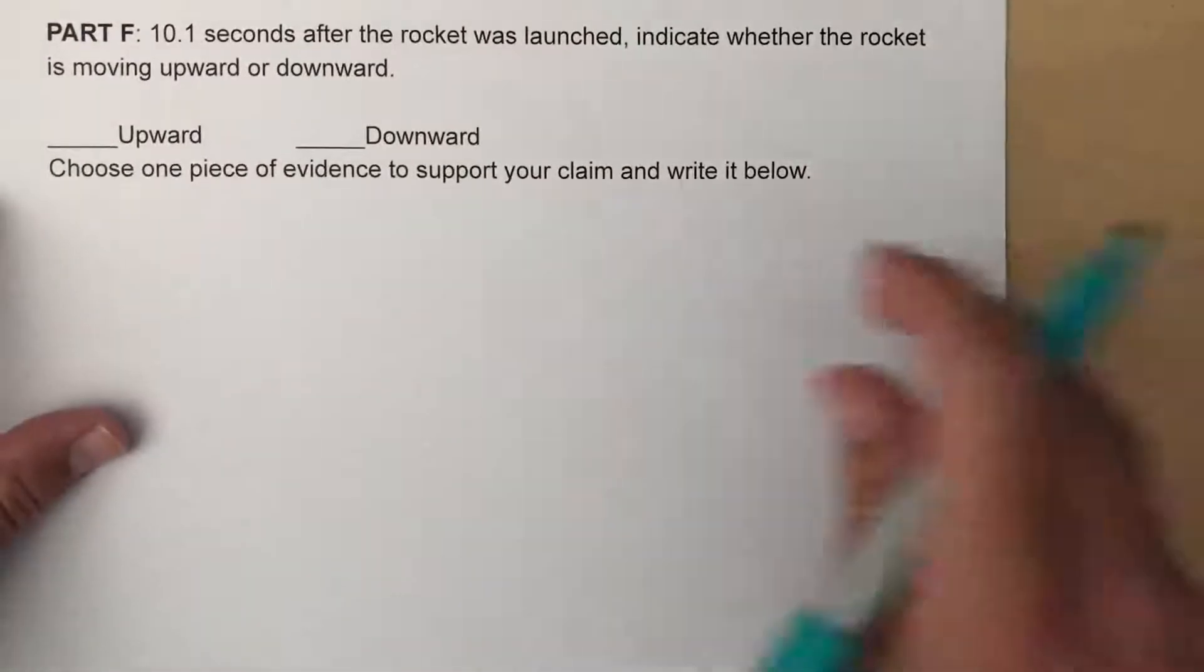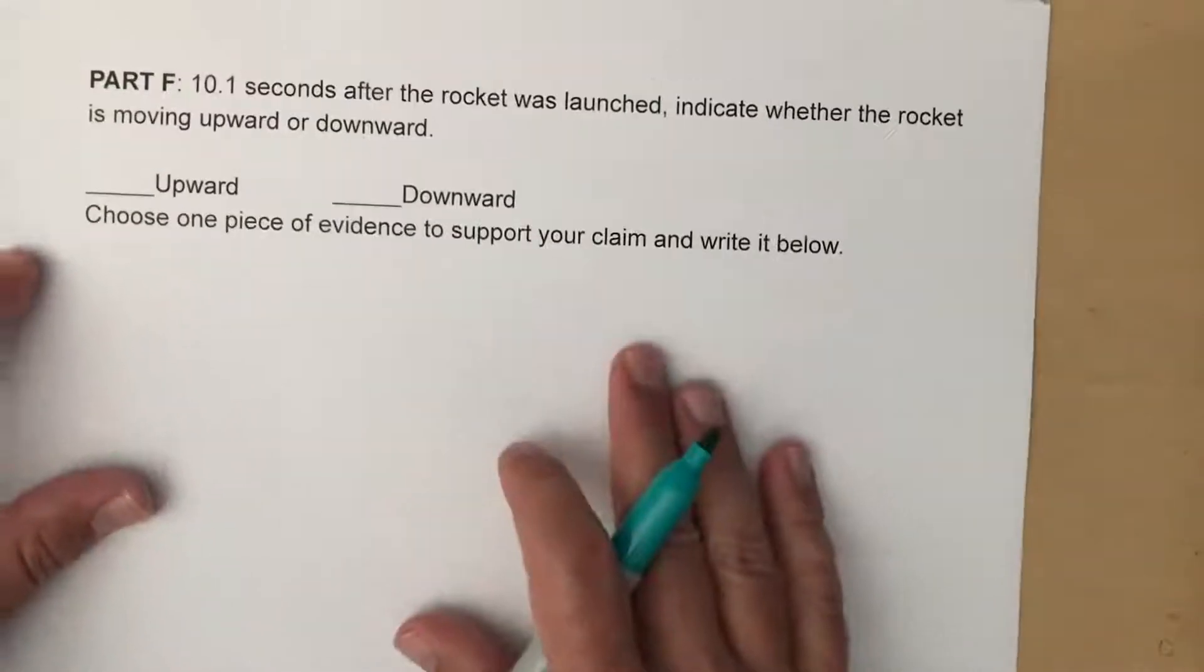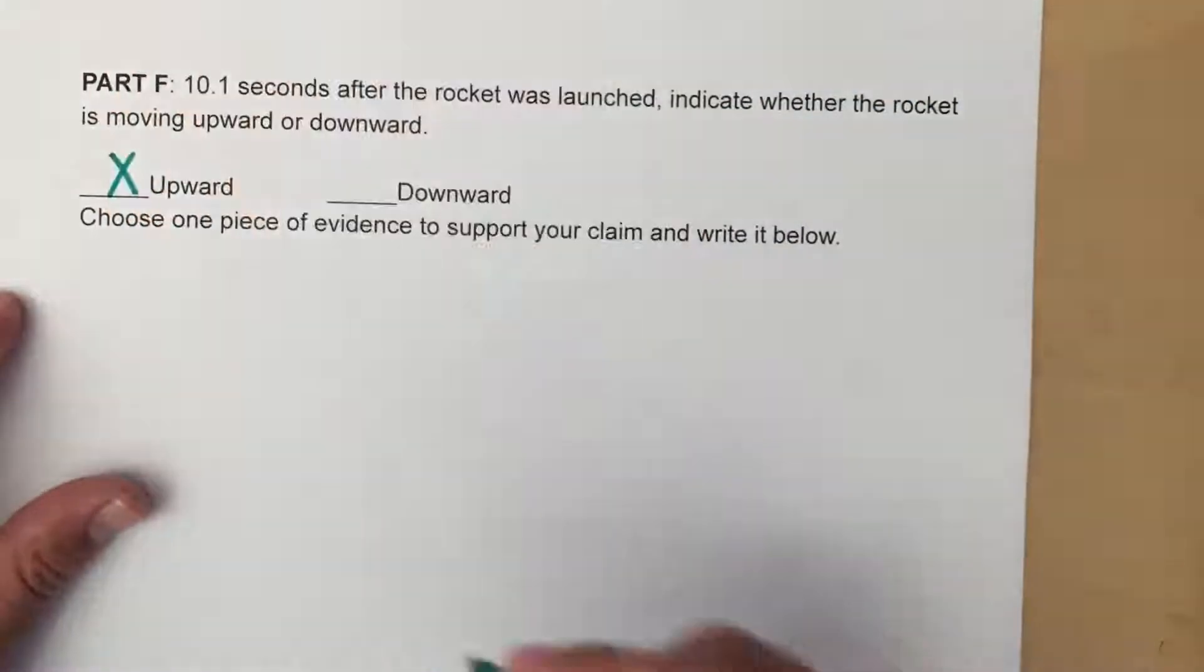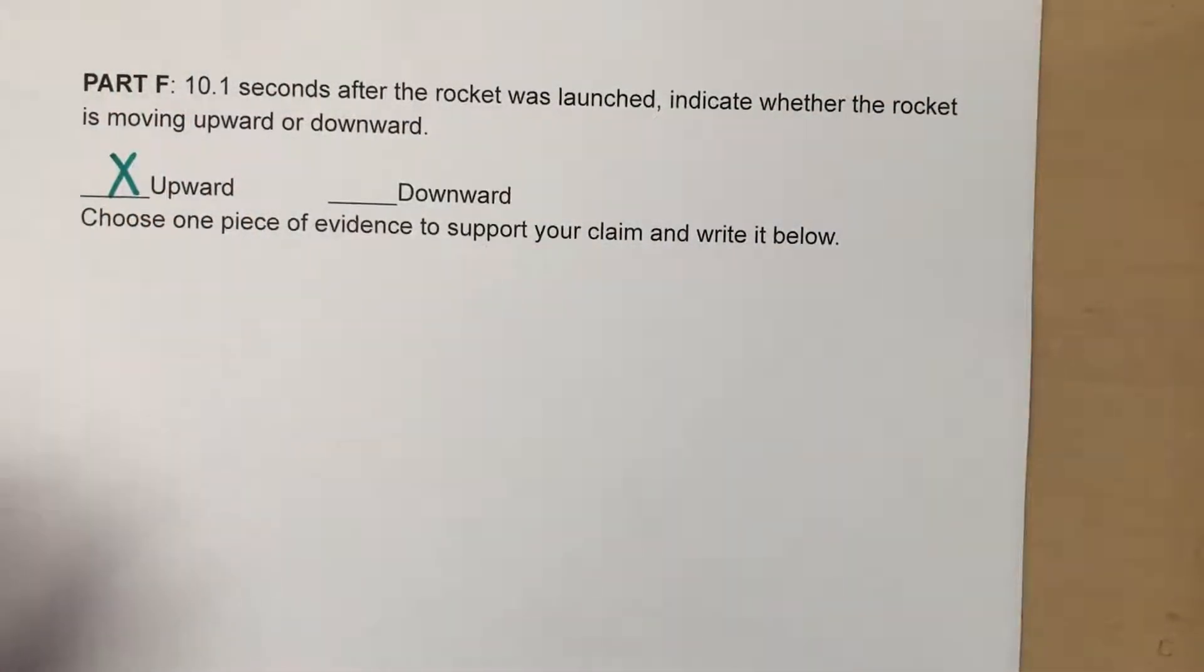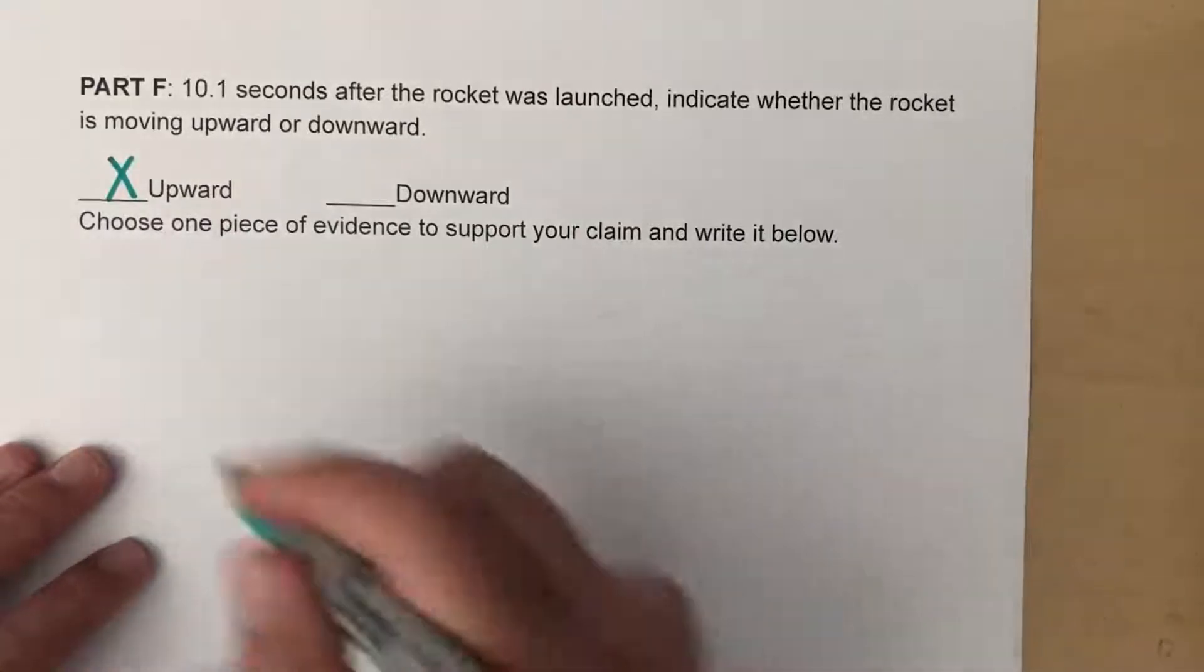And then last part here, it says 10.1 seconds after the rocket was launched, indicate whether the rocket is moving upward or downward. Some people think because it's being pulled down, oh it's going to go down now, but it's still going upwards. It is just beginning to lose speed. Choose one piece of evidence and write your claim below.